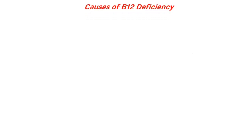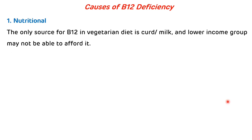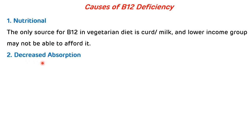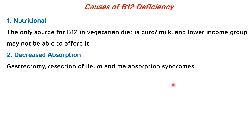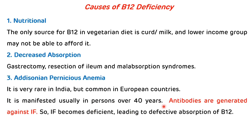Causes of vitamin B12 deficiency: First is nutritional — the only source in a vegetarian diet is curd and milk, and lower-income groups may not be able to afford it. Second is decreased absorption — gastrectomy, resection of the ileum, and malabsorption syndromes. Third is pernicious anemia — an autoimmune disorder where antibodies are produced against the intrinsic factor of Castle. This disorder is rare in India but common in European countries, and is usually manifested in persons over 40 years, leading to defective absorption of vitamin B12.